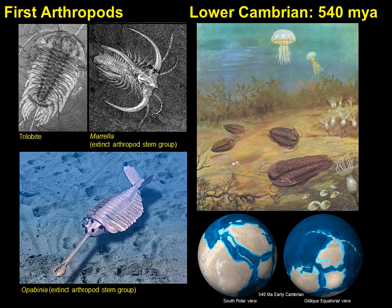The first arthropods appear in fossils dated to the lower Cambrian, around 540 million years ago. This was a very different world than we live in today. The planet was warmer, most of the land was aggregated in the southern hemisphere forming a short-lived supercontinent called Panotia — not to be confused with the more famous Pangaea from the late Paleozoic and early Mesozoic. Life was basically restricted to the sea, and during this period several major phyla appear for the first time in what has been called the Cambrian Explosion.